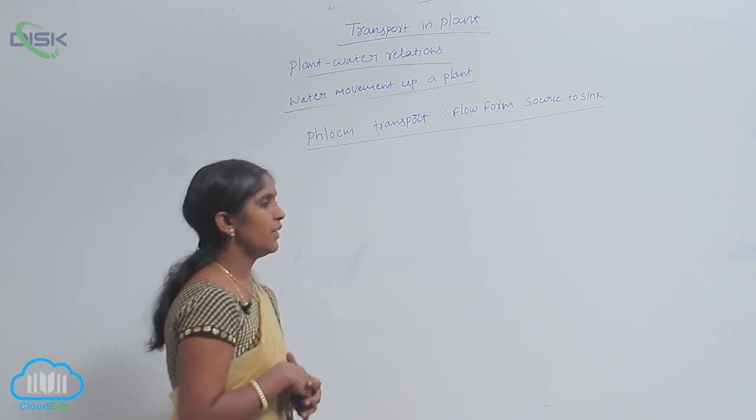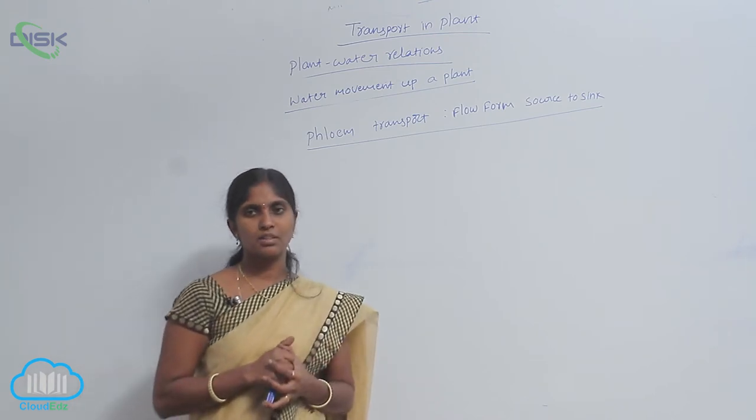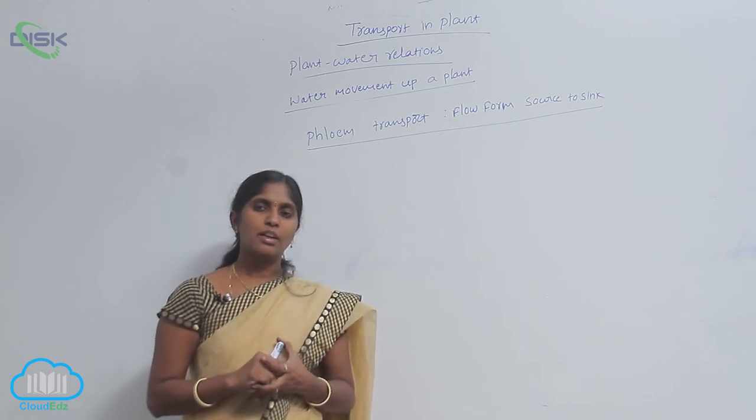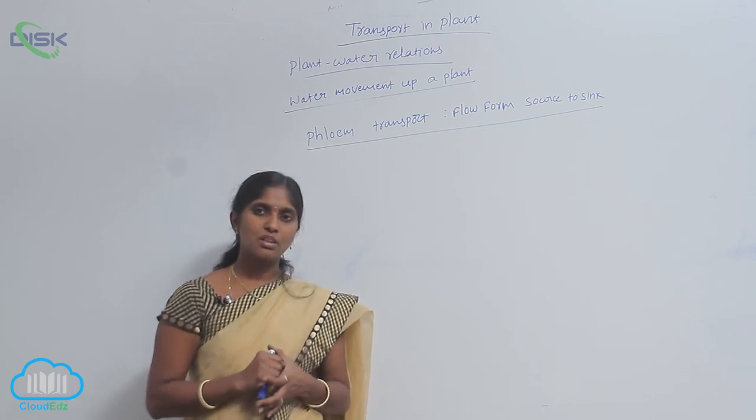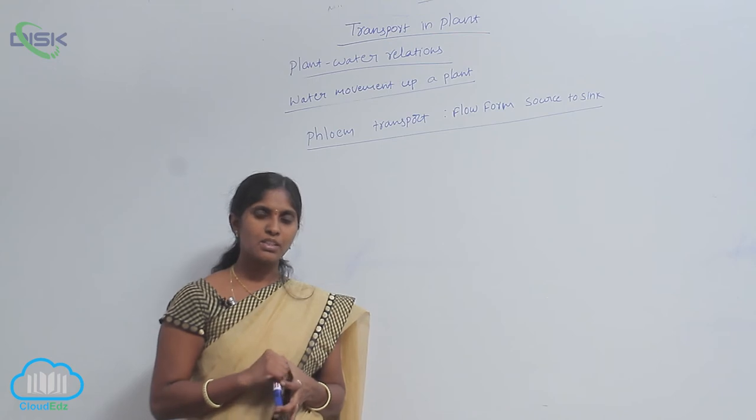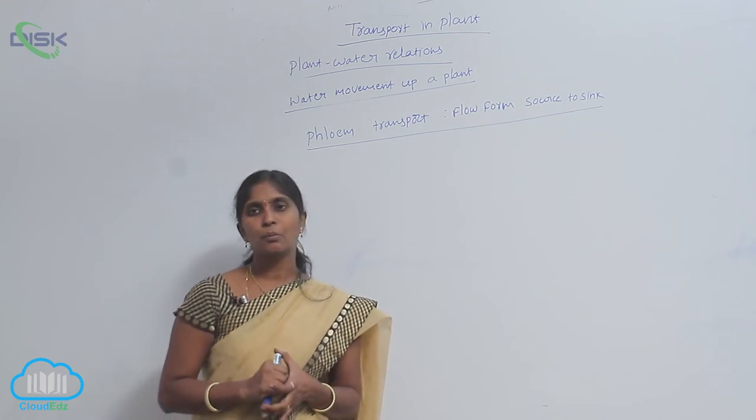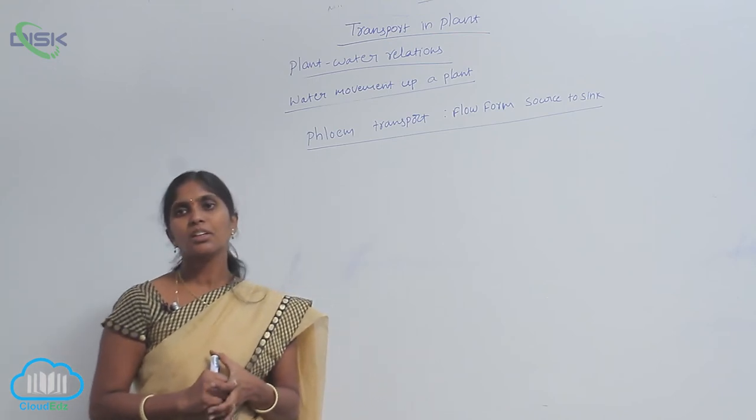Where are the sugars produced first? During photosynthesis, glucose is formed at leaves. The formed glucose is converted into sugars.